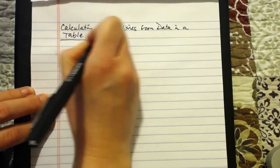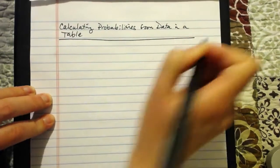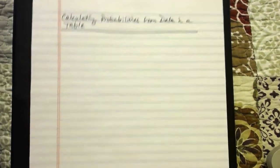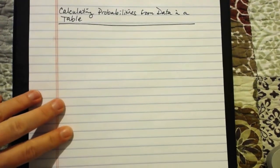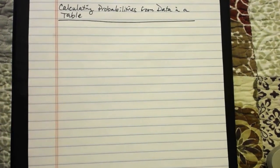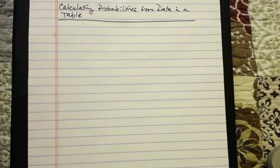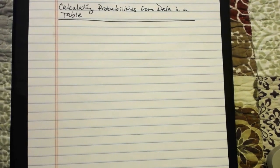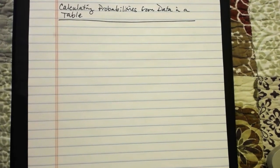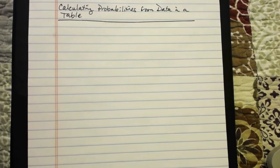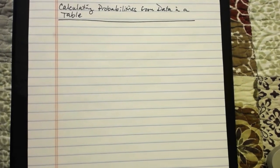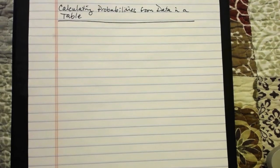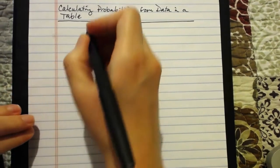So far, everything that we've done in the previous videos, we've been able to use theoretical probabilities because we've known enough about the background information to be able to do that. But sometimes we'll actually have empirical probabilities that we're interested in calculating based on a certain number of trials and the outcomes of those trials.